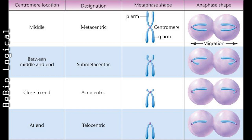Submetacentric chromosomes become J- or L-shaped at anaphase. Next is acrocentric, where the centromere is located close to one end of the chromosome, giving a very short arm and a very long arm — these chromosomes acquire a J-shape or rod-shape during anaphase. The last type is telocentric, where the centromere is located at one end of the chromosome so that it has only one arm — these chromosomes are I-shaped or rod-shaped.